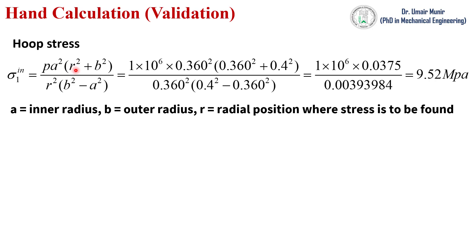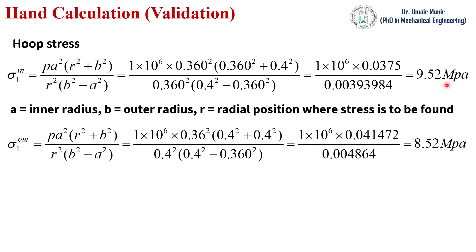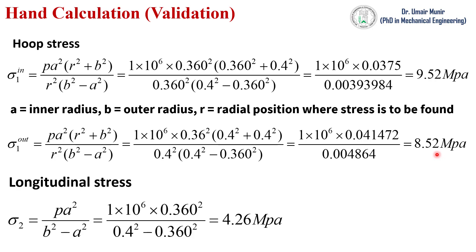If we want to calculate the hoop stress at the inner radius, then the r value is equal to 360 mm. At the inside of the pressure vessel the hoop stress is equal to 9.52 MPa, and at the outer surface of the pressure vessel the hoop stress is 8.52 MPa. We can also calculate the longitudinal stress using this equation, and the longitudinal stress is 4.26 MPa.